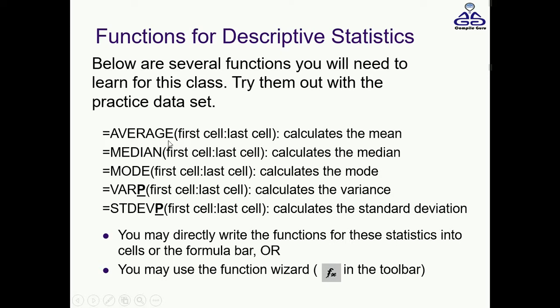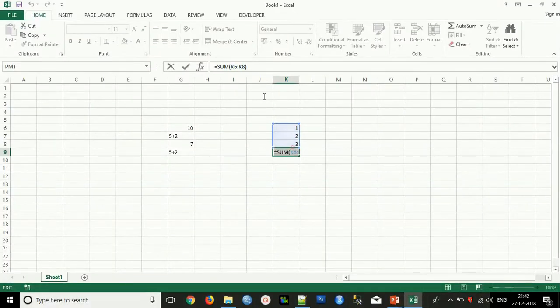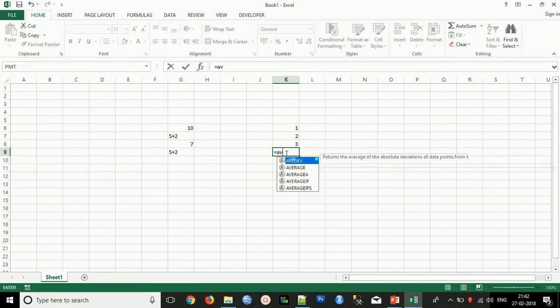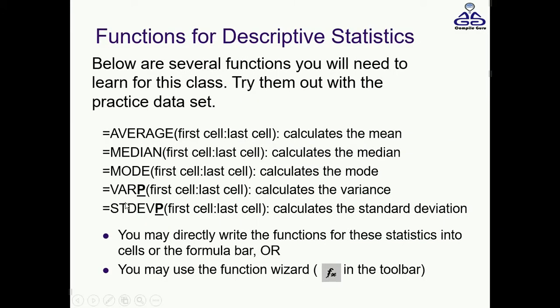you just want to know the average of these three numbers. Just click and type AVERAGE. You can find the average simply. You can calculate median, mode, and standard deviation using these functions directly with the equal sign. These are the calculations you can use.